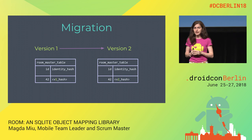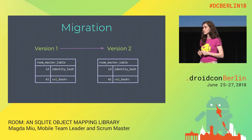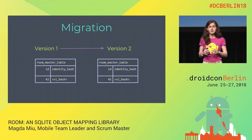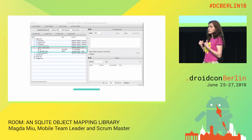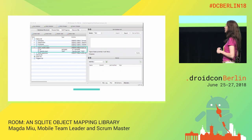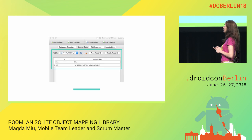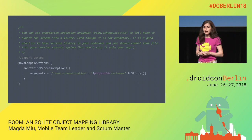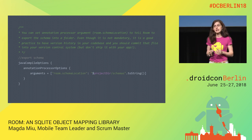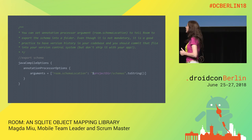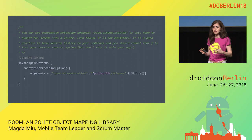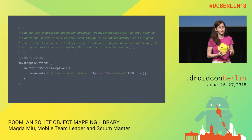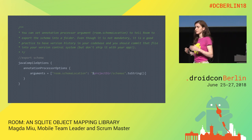Behind the scenes, there is a Room master table containing an identity hash. This identity hash changes every time the database schema changes, so Room knows whether a migration is needed. If you explore your database with a database explorer, you'll find this room_master_table with the identity hash. We also have the opportunity to export the database schema as a JSON file in our project folder using an annotation processor option — useful for new team members and for reviewing what changed in older versions.